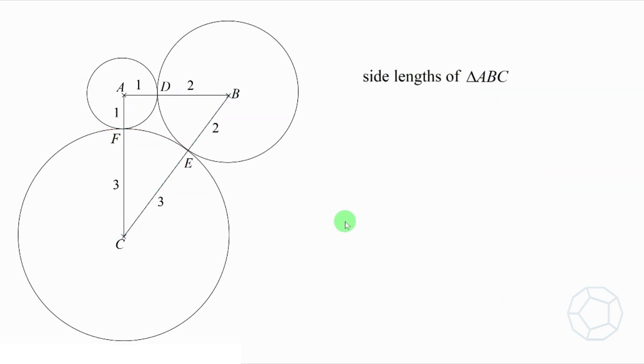Now, let's check out the lengths of the three sides. We mark down the radii of the three circles in the figure. Then, AB is equal to 1 plus 2, which is 3cm. AC is 1 plus 3, which is 4cm. And BC is 2 plus 3, which is 5cm. What's so special about the lengths 3, 4 and 5?